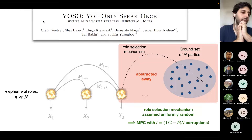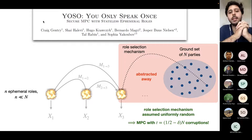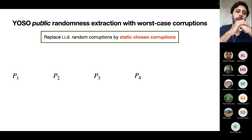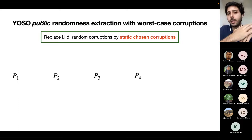What they show is that if you corrupt strictly less than half of the parties, then you can basically do secure MPC in this setting, assuming that the role selection mechanism is uniformly random. This brings us to our work, where we consider a modification of this original YOZO setting — we replace IID random corruptions with static chosen corruptions.